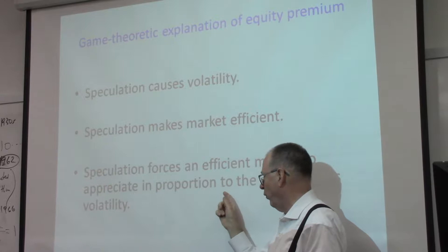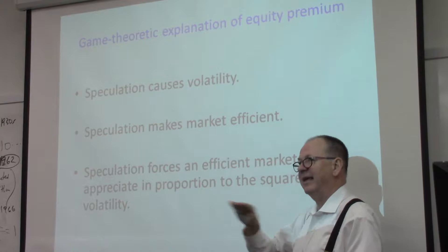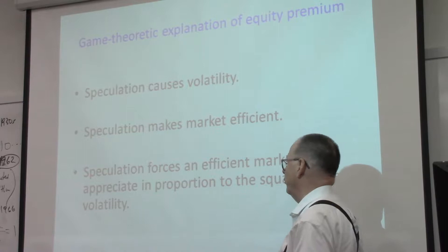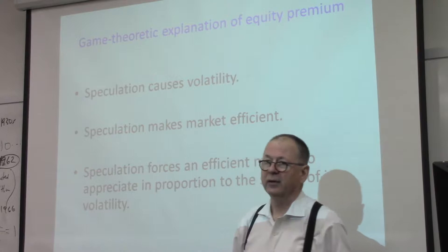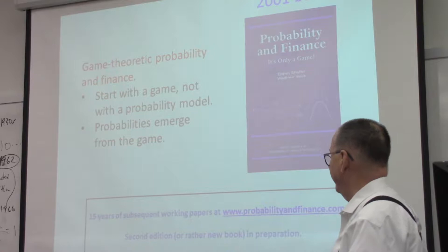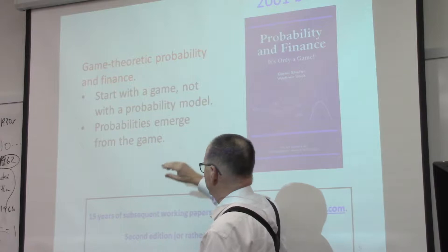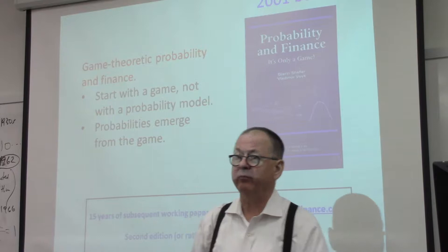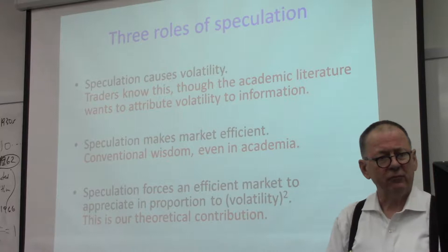An efficient market is one where you can't make money off of it because somebody else has already made all the money by speculating. If the market is efficient, then mere speculation will force the market index — the S&P 500 — to appreciate in value in proportion to the square of its volatility. The volatility is the square root of the variance, and the square of the volatility is the variance.